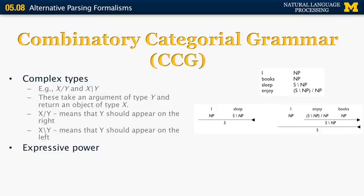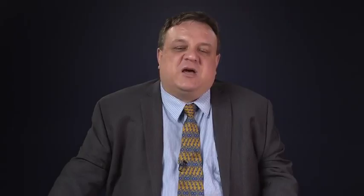For 'I enjoy books': enjoy is combined with books by replacing the NP on the right, returning S backward-slash NP. Then that gets combined with I to become S. This shows that from a syntactic point of view, 'enjoy books' and 'sleep' have the exact same structure — both are things that combine with a subject to form a sentence. The expressive power of CCGs is that they can generate languages like a^n b^n c^n d^n for n greater than zero, which context-free grammars cannot do.